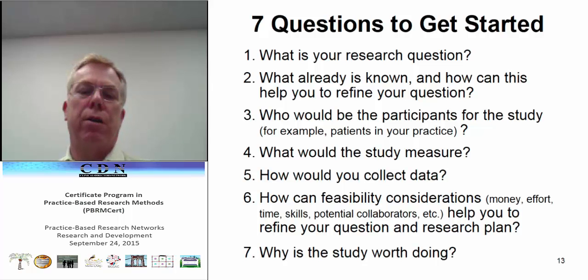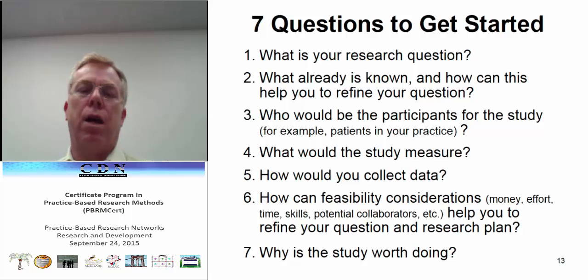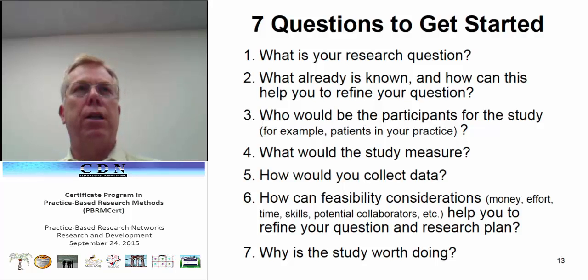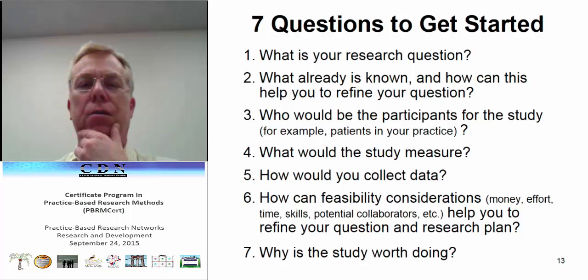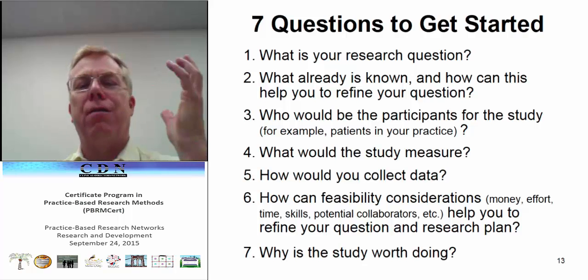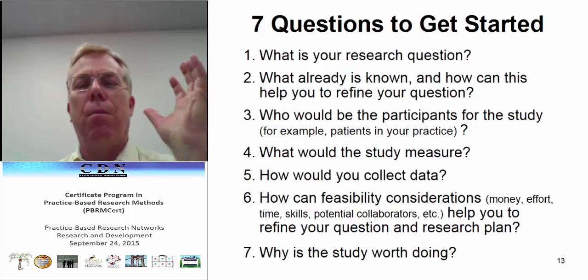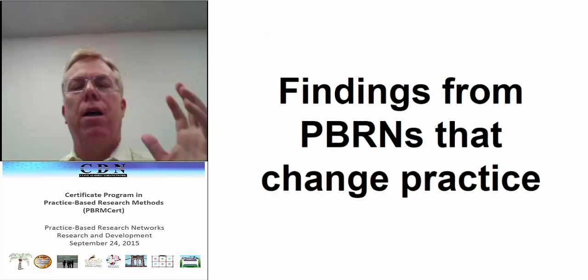When meeting with practitioners in our network to organize a question, we have a worksheet that asks seven questions: What's the question? What's already known about this? Who would be in this study? What would you measure? How would you collect the data? What's feasible to do? And after all those refinements, is this still worth doing? That's a helpful way when you're thinking about your own studies or when working with others in the network or with academic partners.